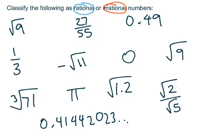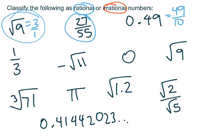Root 9. Root 9, even though we know that a lot of radicals are irrational, root 9 is not irrational because root 9 equals 3, which can be written as a fraction. So root 9 is a rational number. 27 over 55, that's already written as a fraction, that is a rational number. 0.49, that can be written as 49 over 100, that is a rational number.